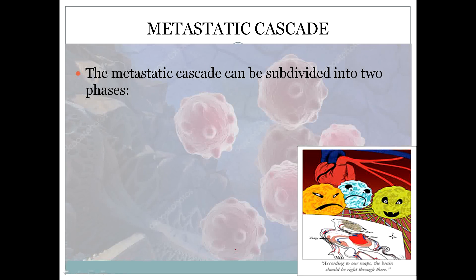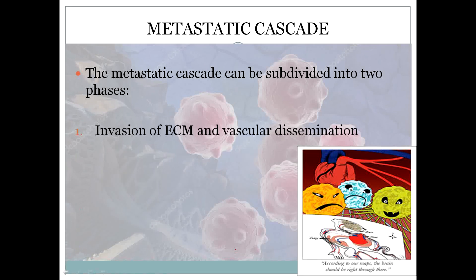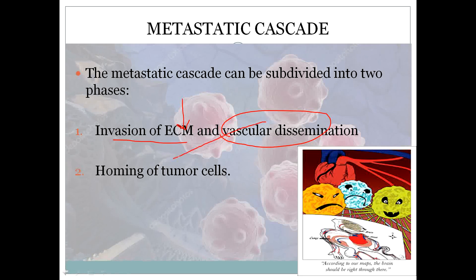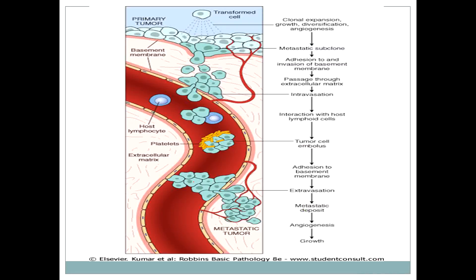The metastatic cascade can be subdivided into two phases. The first is invasion of the extracellular matrix — wherever the tumor is, it must invade the ECM, then enter vessels for dissemination. The second phase is vascular dissemination and homing of tumor cells. After entering vessels, the tumor cells travel to a secondary site where they cause homing — making a new home at the secondary site.